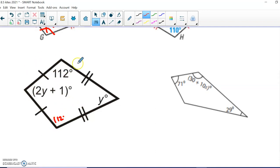So I'm going to take 112 plus 112 gives us 224. Take 360 minus 224. Let's see what we have left over. Looks like we have 136 degrees left over.